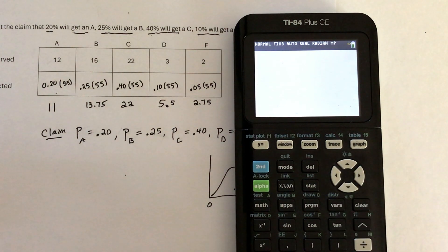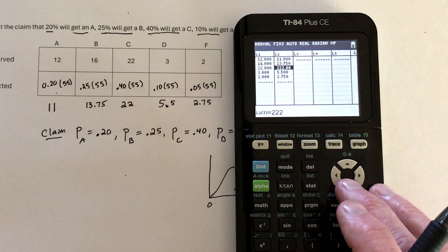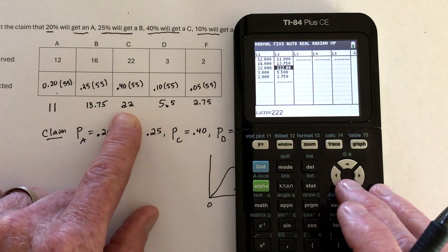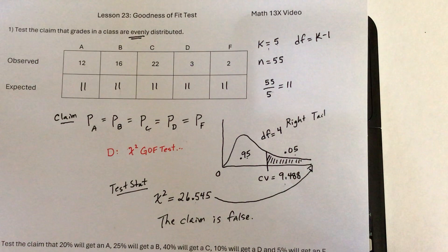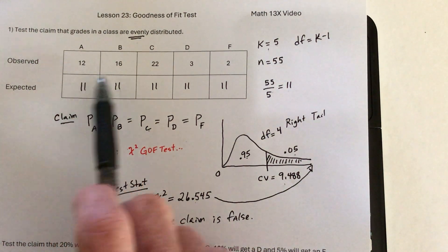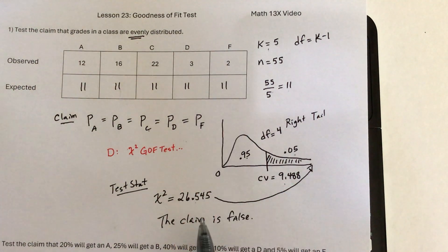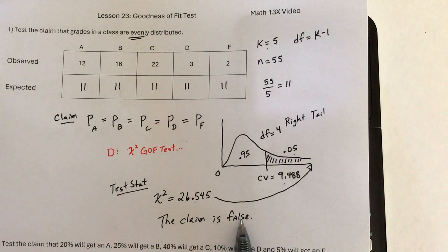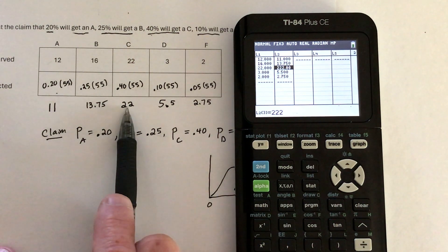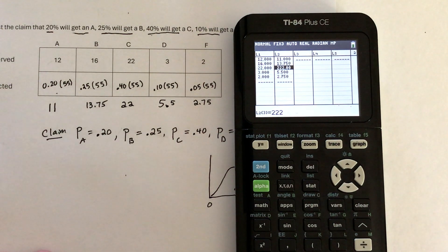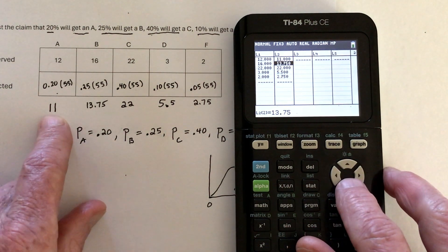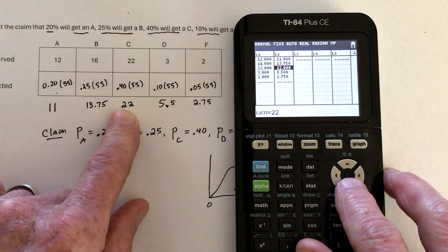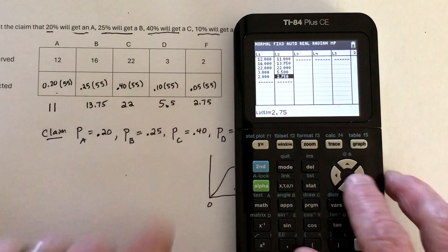The result came out as chi-squared equals 181, which seems very large. Looking back at the list, when entering the expected value of 22, I accidentally typed 222. That's why I thought it was strange — the test statistic should be large enough to reject, but 181 is unreasonable. So go back and correct the 222 to a regular 22. Now the values are: 11, 13.75, 22, 5.5, and 2.75. That's correct, so go back to STAT, TESTS, goodness of fit test.